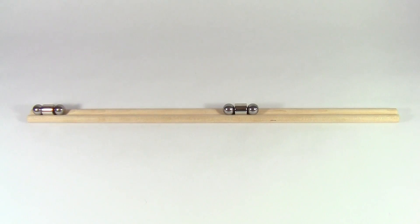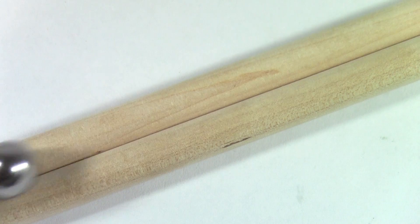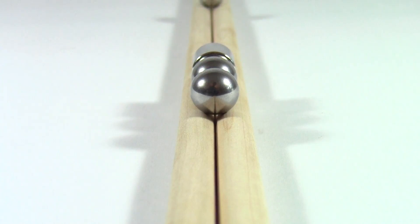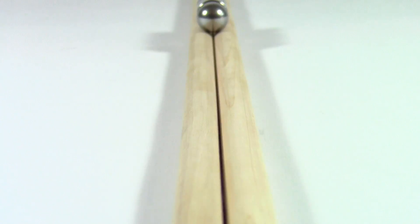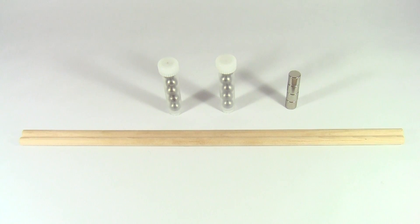Hi, this is Ben Finio with Science Buddies, and in this video we'll show you how to build a Gauss Rifle, a fun physics experiment that uses magnets to launch projectiles at high speeds. All the parts to build one are available in a kit from Science Buddies.